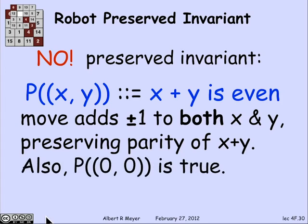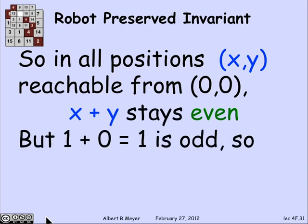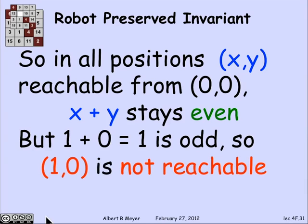At the origin, 0 + 0 = 0, which is even. So we're in a Floyd invariant principle case: all positions reachable from origin (0, 0) — which has an even sum — must have an even sum. Since 1 + 0 is odd, you can't get to that square (1, 0). It's not reachable.